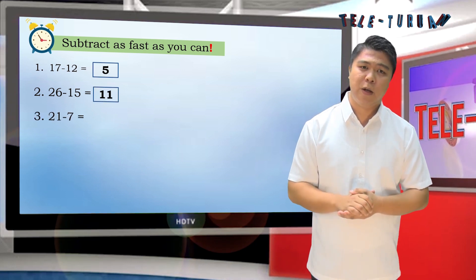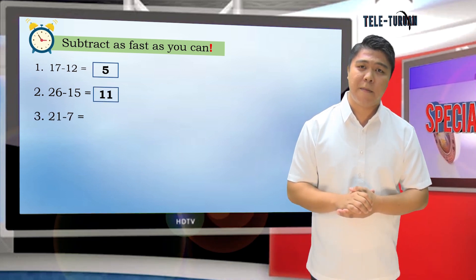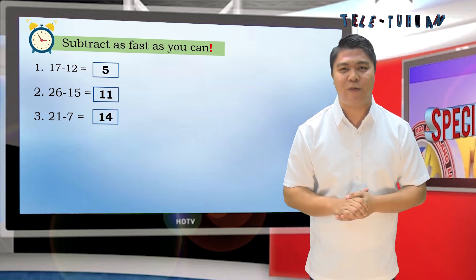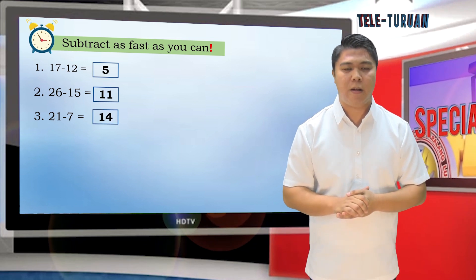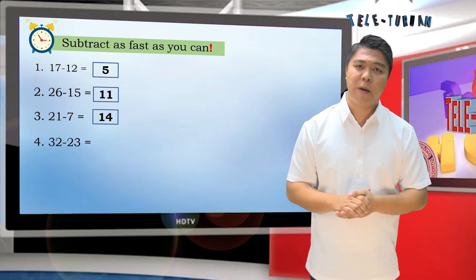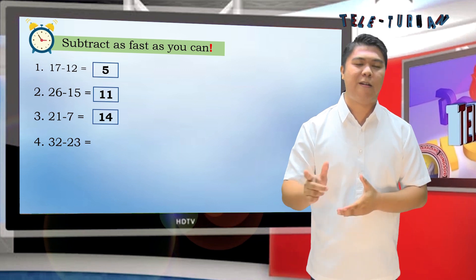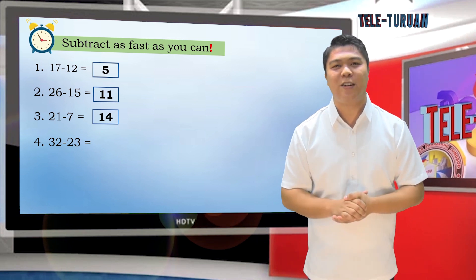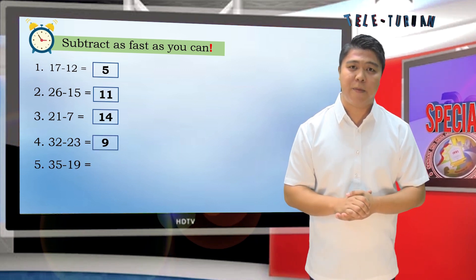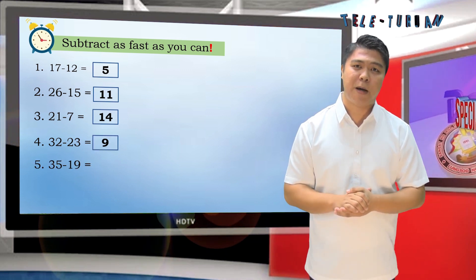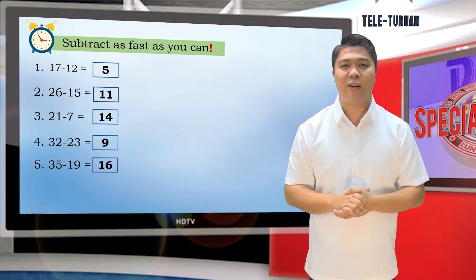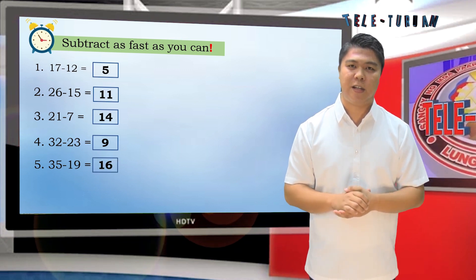Number 3: 21 minus 7. Very good! The answer is 14. Number 4: 32 minus 23. You are right! The answer is 9. Number 5: 35 minus 19. Correct! The answer is 16.